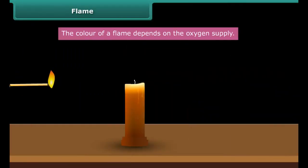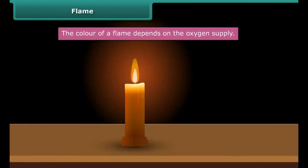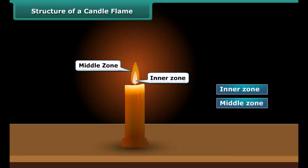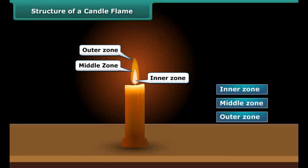When we burn the candle with a matchstick, the heat of the matchstick melts and vaporizes wax, which rises through the wick and forms a flame. A candle flame can be divided into three regions: inner zone, middle zone, and outer zone.